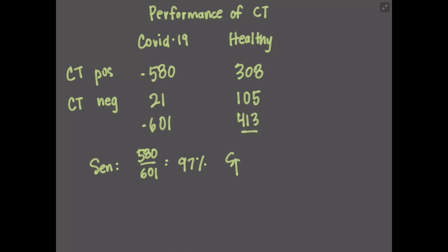For specificity, we want to look at the total number of negative cases for the test we were looking at, 105 CTs were negative, and 413 of those were actually healthy. So the math on this is 105 divided by 413, and that comes out to about 25% for specificity.